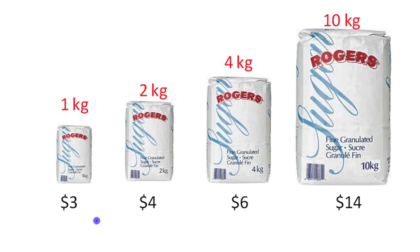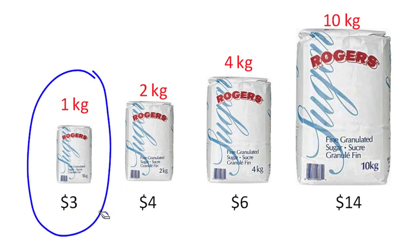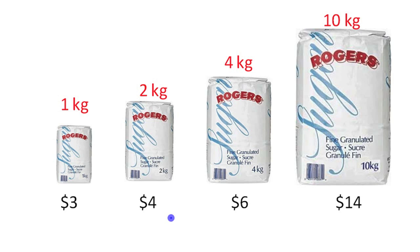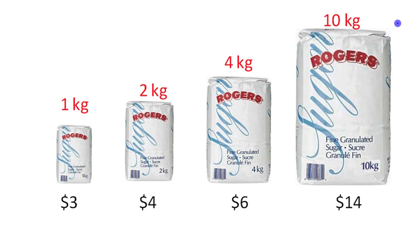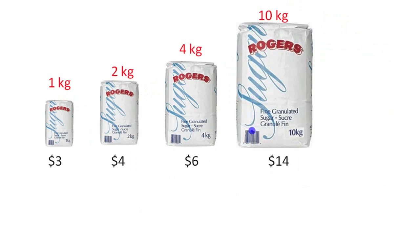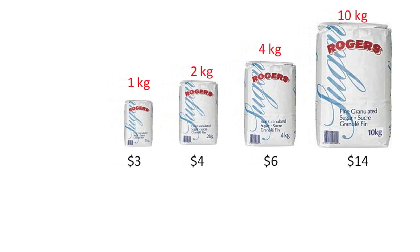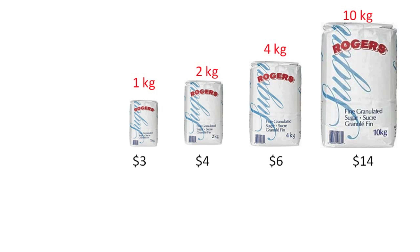We have four different sugar bag options: the one kilogram bag for three dollars, the two kilogram bag for four dollars, the four kilogram bag for six dollars, and the ten kilogram bag for fourteen dollars. To compare and figure out which is the best buy, we're going to write a rate for each one. We're comparing quantities with different units, which is why we use rates — comparing the price of the bag to the mass of the bag.